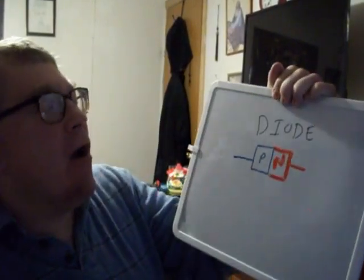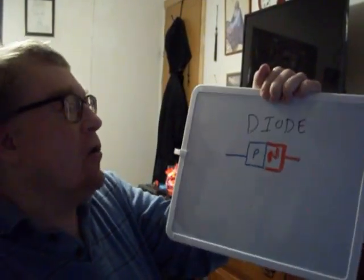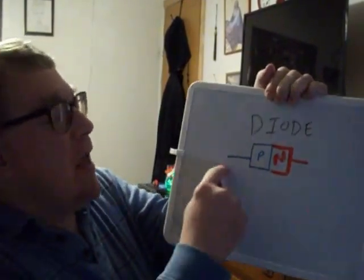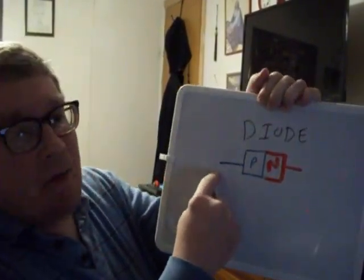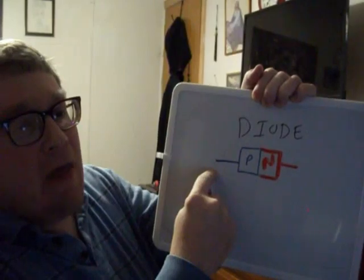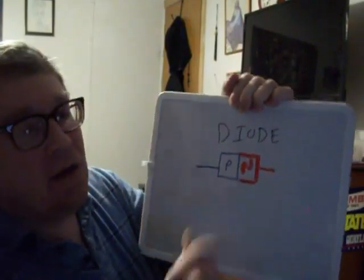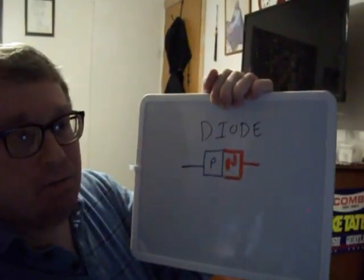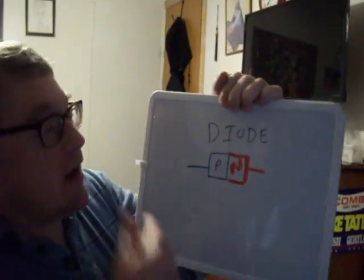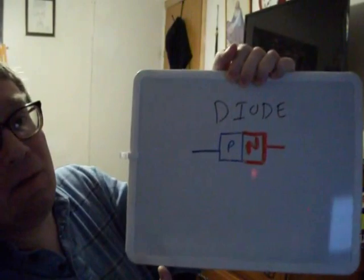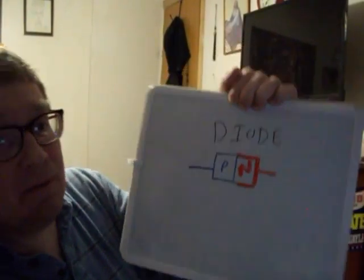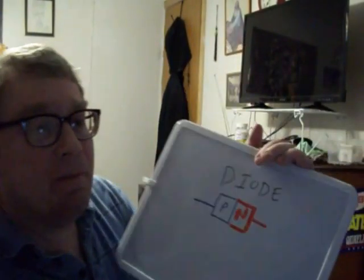One side of a diode is an anode — we are going to call this the anode. And the other side is a cathode. So it is kind of like a battery.